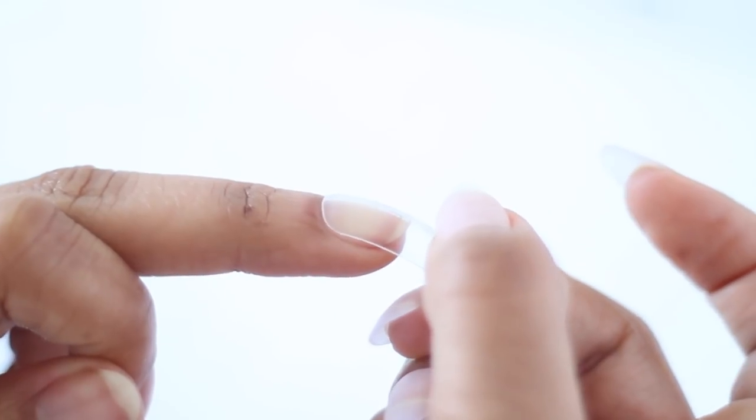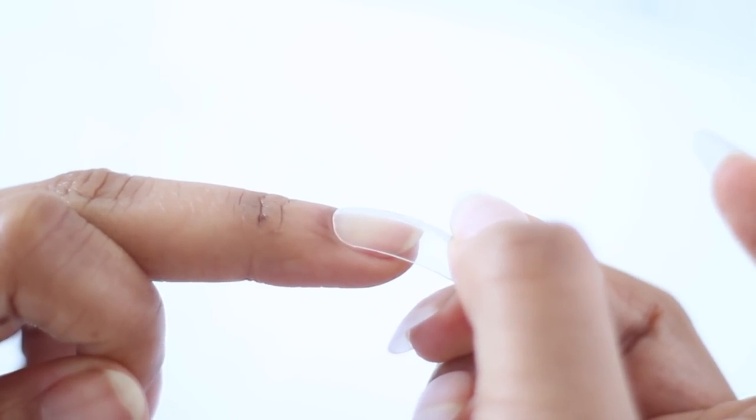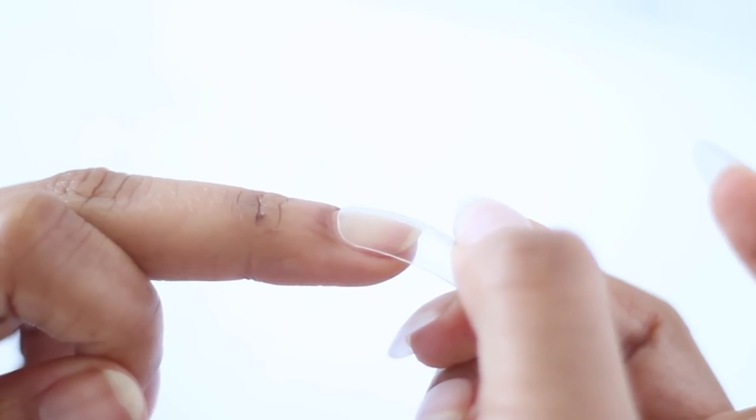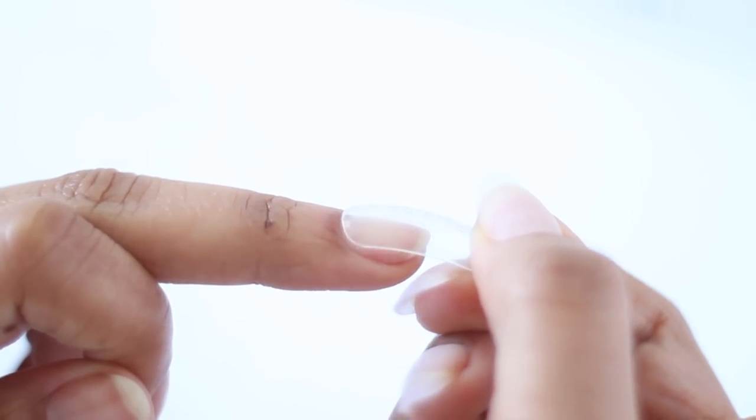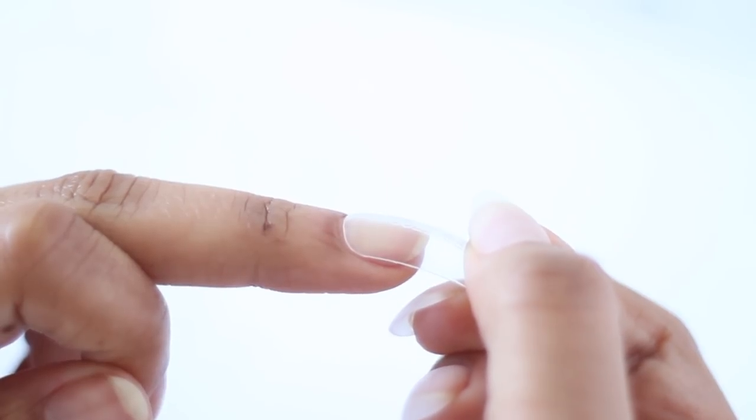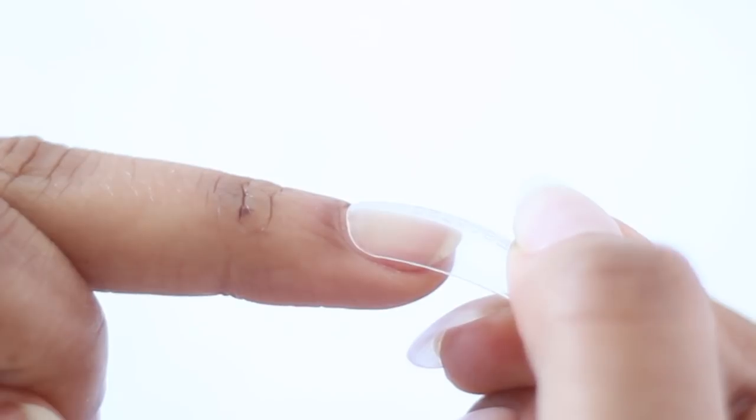What you don't want to do is put the form on way up against the cuticle and press down. This will give you a false read because this is not how the form is really going to fit. You don't want it to be that tight. You need to build some height. So you want to back away from the cuticle a little bit and check that you have that gap of space forming the arch above your nail.